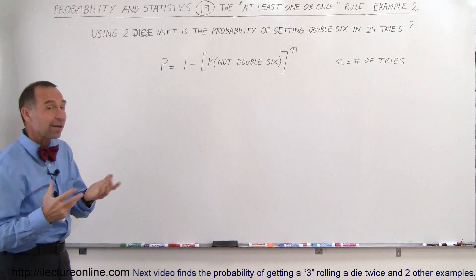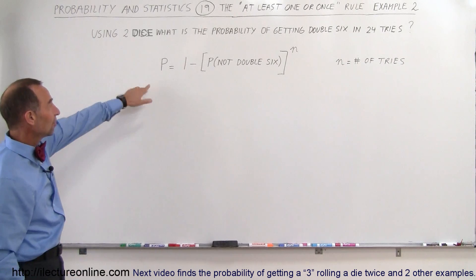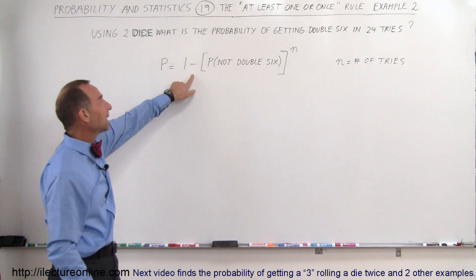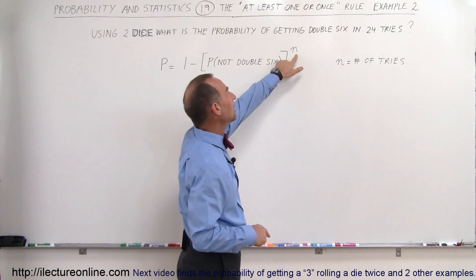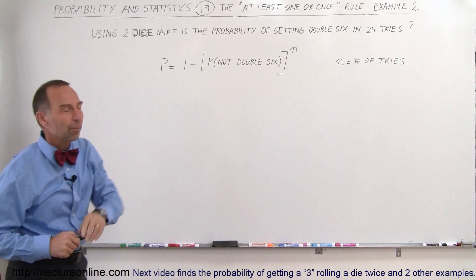What's the probability? Is it better than 50-50? Well, let's find out. Again, the equation is the same, but the probability is 1 minus the probability of not getting a double 6 to the n power, and n, of course, is the number of tries.